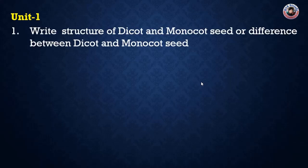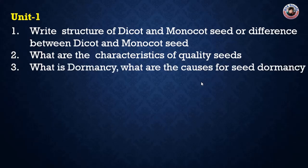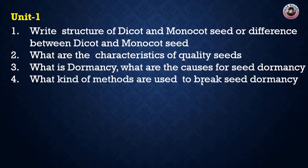The first question is the structure of dicot and monocot seeds, and the difference between dicot and monocot seeds. The second question is the characteristics of quality seeds. The third question is what is dormancy, what are the causes for seed dormancy, and what kinds of methods are used to break seed dormancy.